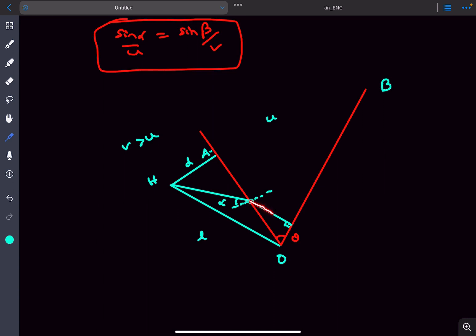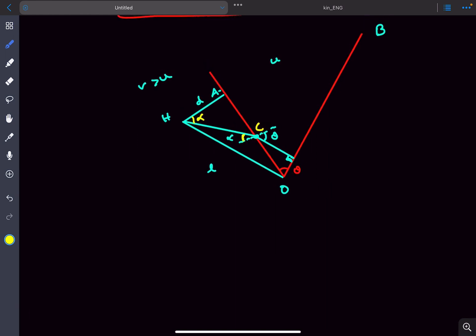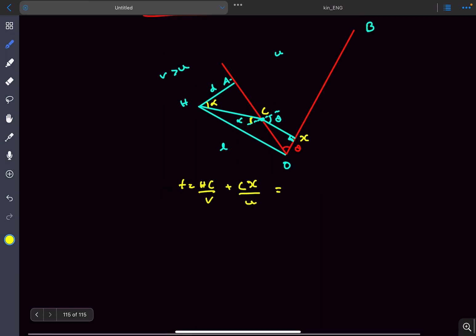The beautiful thing about this condition is that since this is 90 degrees, this angle is going to be theta as well. If this angle is alpha, then this angle will be alpha as well. We have to find the time. Let's say this point is C. The time T will be HC divided by V plus CX divided by U. Now using the result we derived earlier, we can say sin alpha upon V equals sin theta upon U. From here, we get sin alpha equals V by U times sin theta.